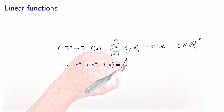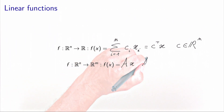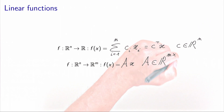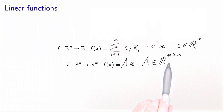For a function from R^n to R^m — one that takes n variables and provides m values — instead of a vector c, we use a matrix A. So the function is written as A times x, where A is a matrix of size m by n: m rows corresponding to the number of output values, and n columns corresponding to the number of input variables.